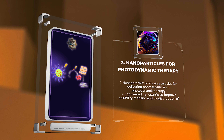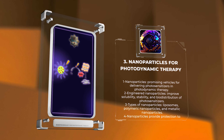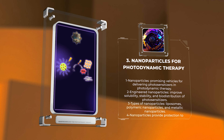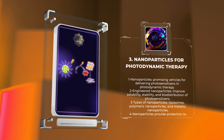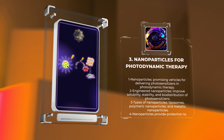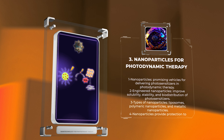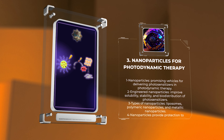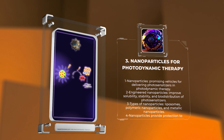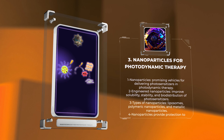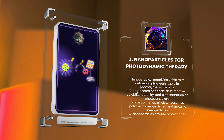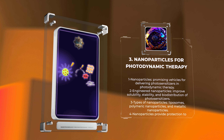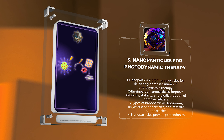Nanoparticles have emerged as promising vehicles for delivering photosensitizers to the target site in photodynamic therapy. These nanoparticles can be engineered to improve the solubility, stability, and biodistribution of photosensitizers, thereby enhancing their therapeutic efficacy. Various types of nanoparticles, including liposomes, polymeric nanoparticles, and metallic nanoparticles, have been explored for this purpose. Additionally, nanoparticles can provide protection to the photosensitizers from premature degradation and improve their uptake and retention within target cells.